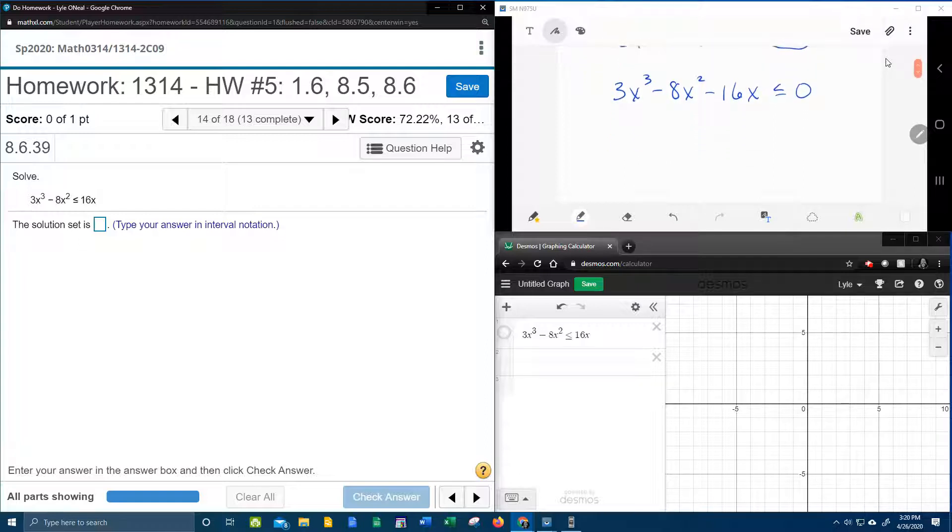And then I notice that all three of these terms have a common factor of x. They all have an x in common. I'm going to factor out an x to begin with. So that will leave me a 3x squared minus 8x. And then the 16 is going to lose his x and be just 16.